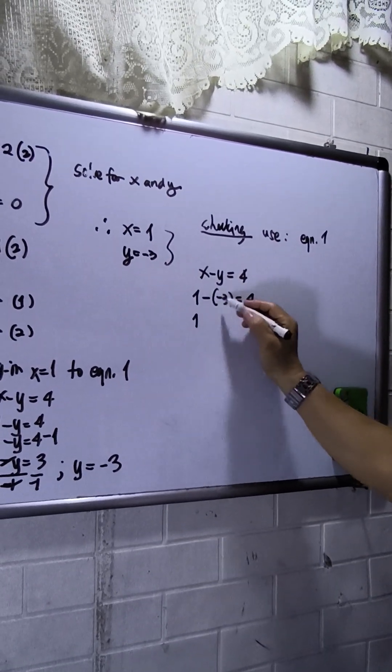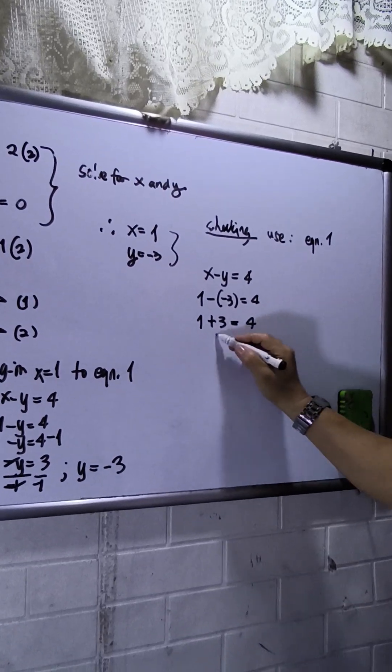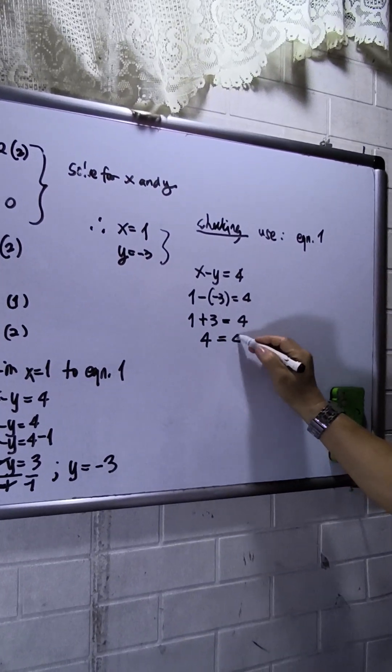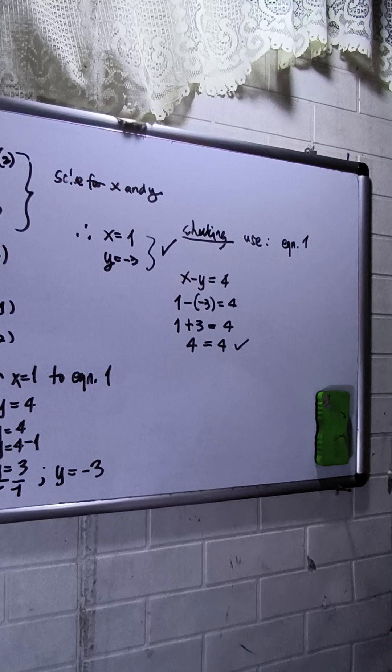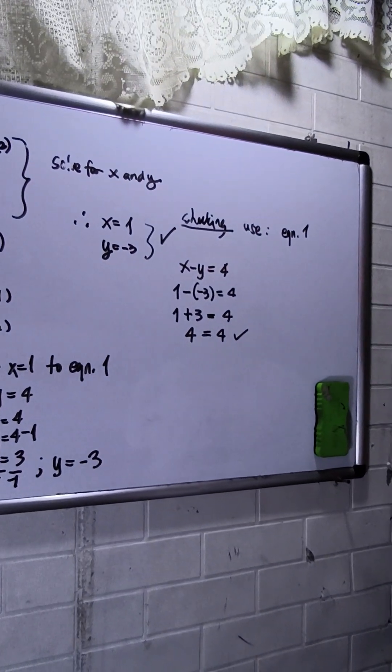So y negative negative, that will be positive. So this will be 4. And then 1 plus 3 is 4 equals to 4. So meaning, x equals 1 and y equals negative 3 are correct.